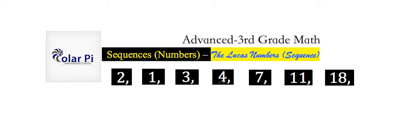So, 1 plus 3 is 4, the 7 is 3 plus 4, the 11 is 4 plus 7, and the 18 is 7 plus 11. So, what should be next in the Lucas numbers after the 18? Well, based on the rule we established, it will be 11 plus 18, which is 29, and that would be exactly right.